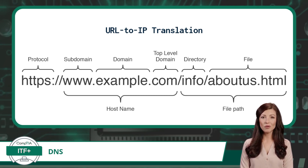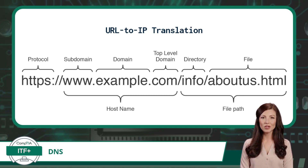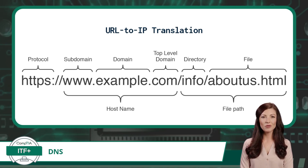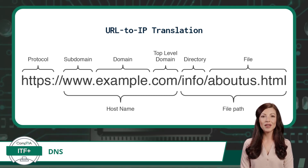For example, in the URL https://www.example.com/info/aboutus.html: the protocol is HTTPS, which is a protocol for secure web traffic; the subdomain is 'www', which stands for World Wide Web; the domain is 'example'; the top-level domain is '.com'; and the file path is 'info/aboutus.html'.